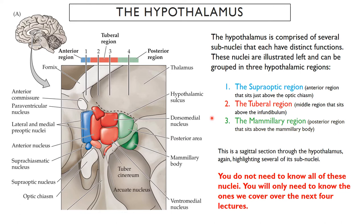The hypothalamus is made up of several sub-nuclei, and they each have distinct functions. These nuclei can be grouped into three major hypothalamic regions, mostly based on anatomy. First, we have the supraoptic region in blue. This region sits right above the optic chiasm. We're looking at a zoomed-in region here — the rostral side is towards the front and the caudal side is towards the back of the brain. This is essentially a midsagittal section through the hypothalamus.